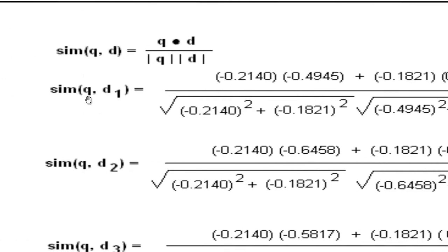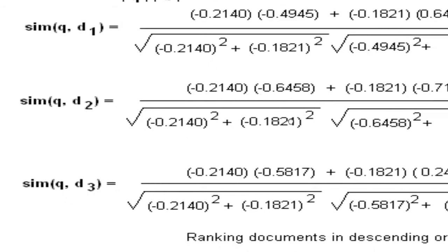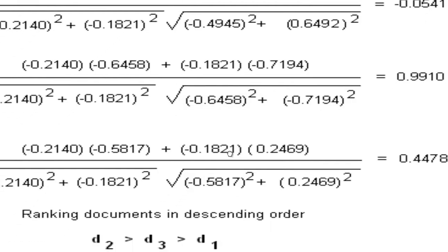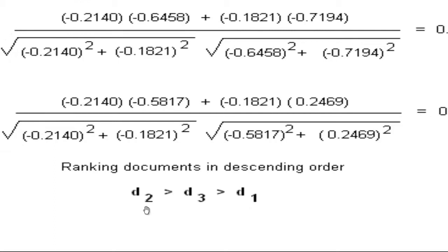Taking the query and document D1: Q dot D equals x1 times x2 plus y1 times y2, divided by the square root of (x1 squared plus y1 squared) multiplied by the square root of (x2 squared plus y2 squared). This equation results in a value of minus 0.0541. Similarly, we calculate similarities between query and document D2, and query and document D3. The similarity value is highest for query and document D2 with a value of 0.99, the next most similar is document D3 with 0.4478, and the least similar is document D1 indicated by a negative value.